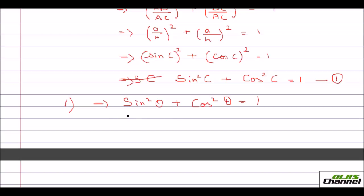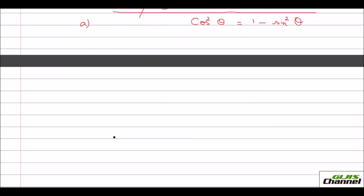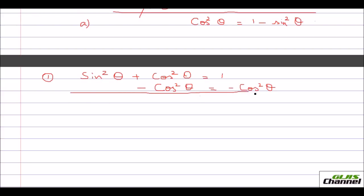When you subtract sin²θ from both sides, you get cos²θ = 1 − sin²θ. I call this identity 1a. And one more: from the first identity sin²θ + cos²θ = 1, subtracting cos²θ from both sides gives sin²θ = 1 − cos²θ. This is derived identity 1b.